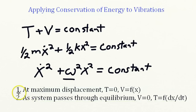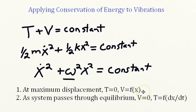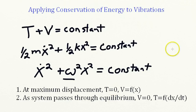First, we can wait until there's a maximum displacement. At that maximum displacement, the kinetic energy will be zero, and the potential energy will be just a function of the position. Think of a pendulum swinging. At the maximum displacement, the kinetic energy is zero because it stops. So let's draw a little pendulum here.